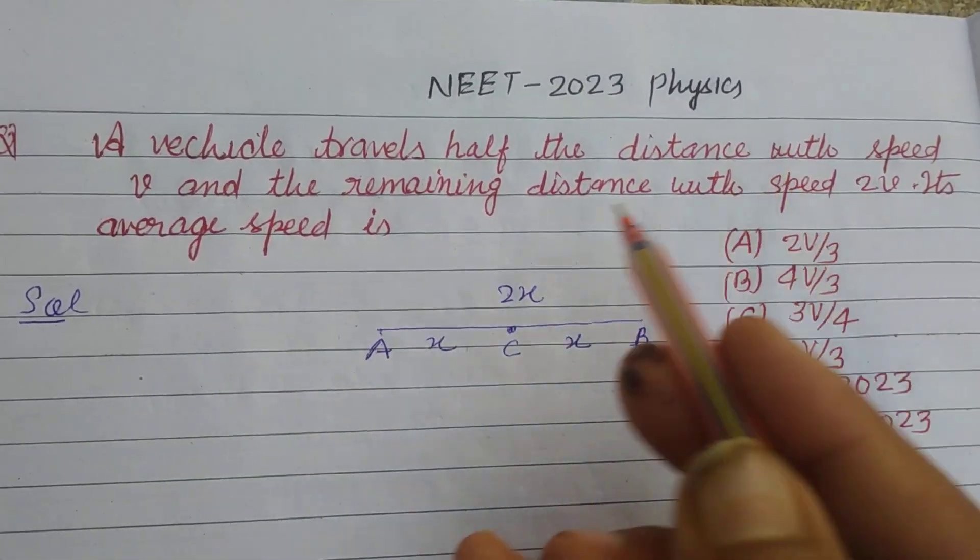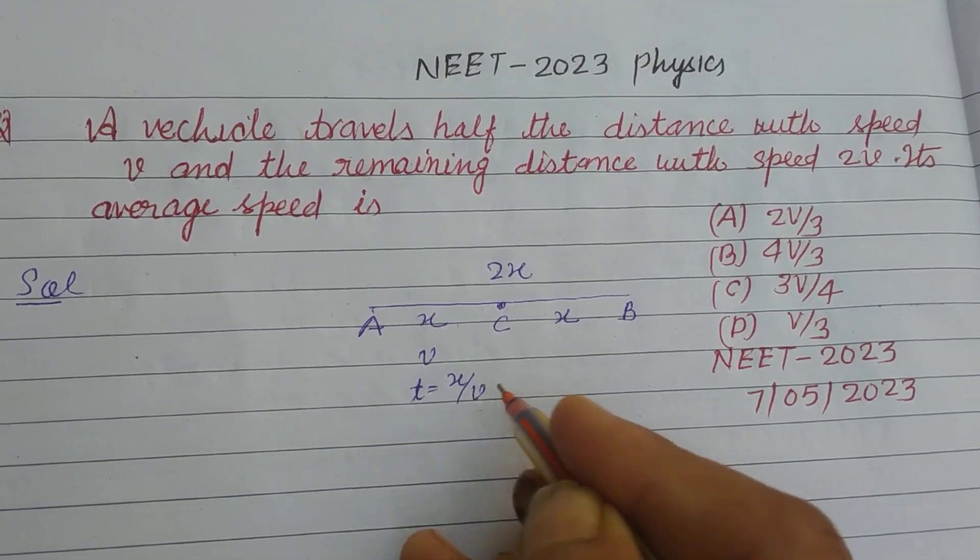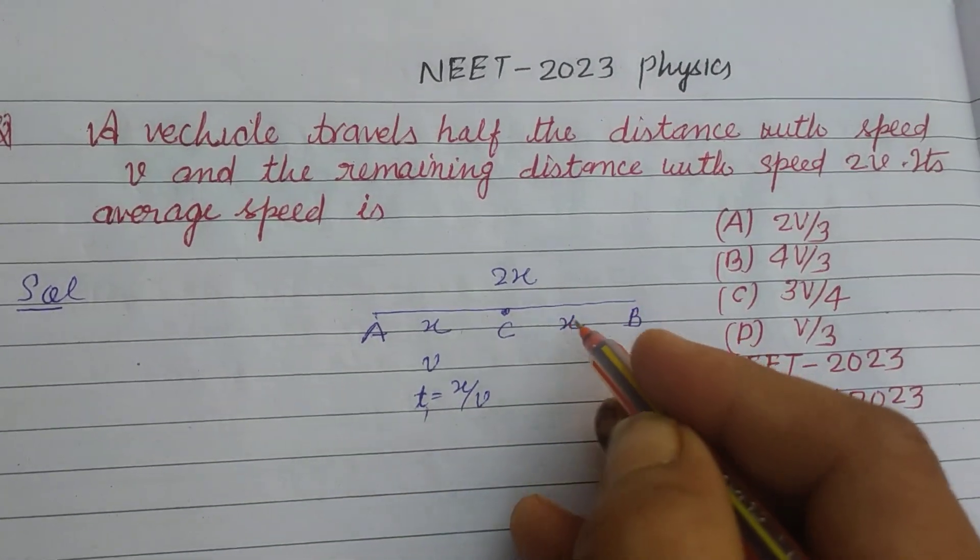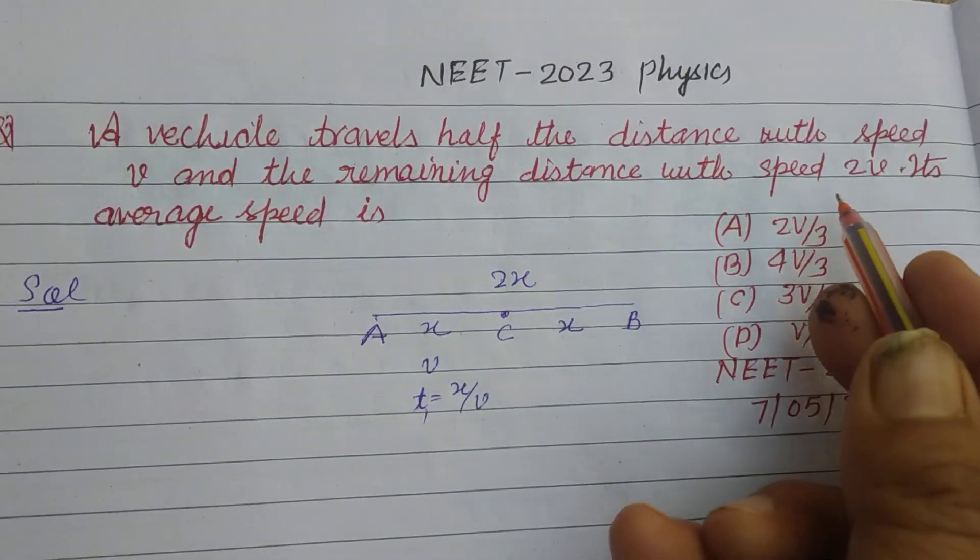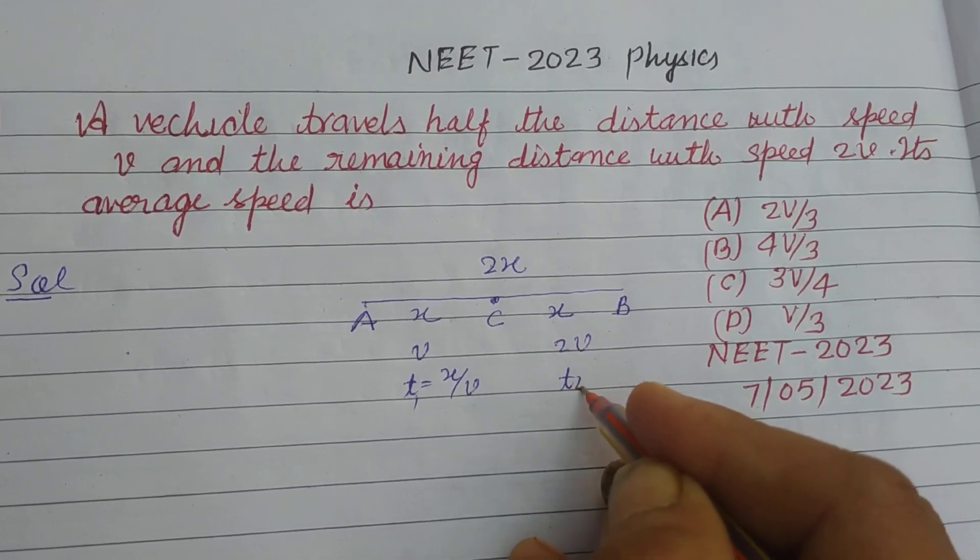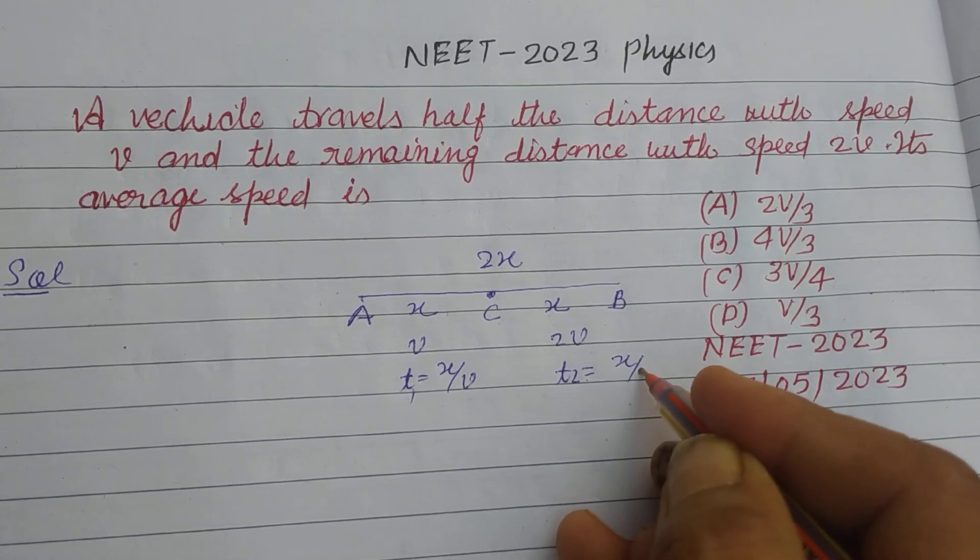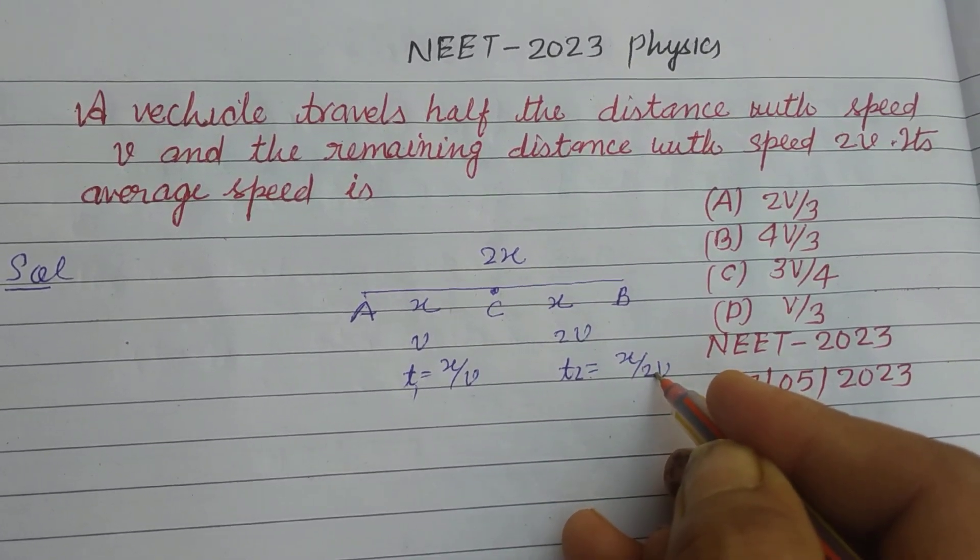First half distance is covered with speed v. So time t1 equals distance upon speed, x upon v. The remaining distance with speed 2v, so time taken from C to B is t2 which is x upon 2v, distance upon speed.